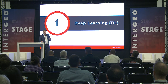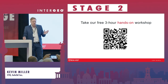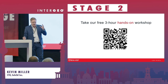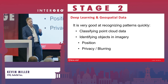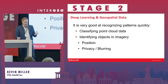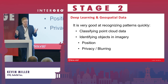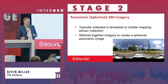We're going to talk about deep learning, which is a bit of an advanced topic. We run a free three-hour hands-on workshop — I'll show the QR code again at the end or you can find us at our booth. At a high level, deep learning applied to geospatial data is very good at recognizing patterns quickly, such as classifying point clouds, identifying objects in imagery, finding their positions, and extracting XYZ values or performing privacy blurring on detected objects.